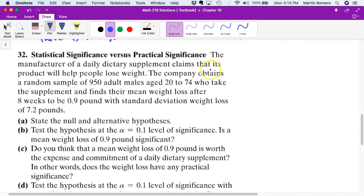Let's go ahead and get number 32 done. The manufacturer of a daily dietary supplement claims that its product will help people lose weight. The company obtains a random sample of 950 adults who take the supplement and find their mean weight loss after 8 weeks to be 0.9 pounds and a standard deviation of 7.2. So in this case we have a sample mean of 0.9 pounds loss, standard deviation of 7.2. So we're really trying to find out, does this work? Does the diet supplement work? So part A, step number 1, the null hypothesis is that the mean is equal to 0, no weight loss versus saying the mean is greater than 0 if there is weight loss.